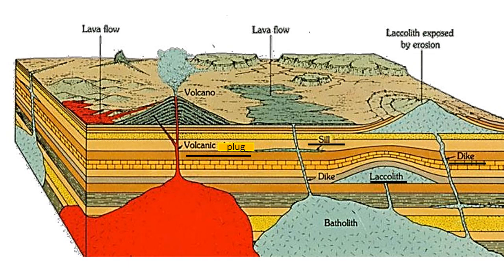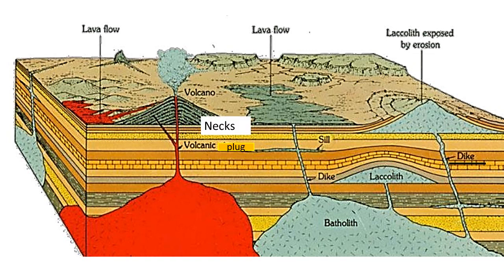Next is lacoliths. The magma does not reach the crust of the Earth and becomes solid just below the crust. The upper surface is dome-shaped but the bottom is flat. Next is sill — a sheet-like body of igneous rock formed when magma flows between the layers of rocks horizontally and then hardens. Next is dykes — dykes represent wall-like formations of solidified magma. The magma is forced upwards, fills vertical cracks in existing rocks, and hardens there to form dykes.